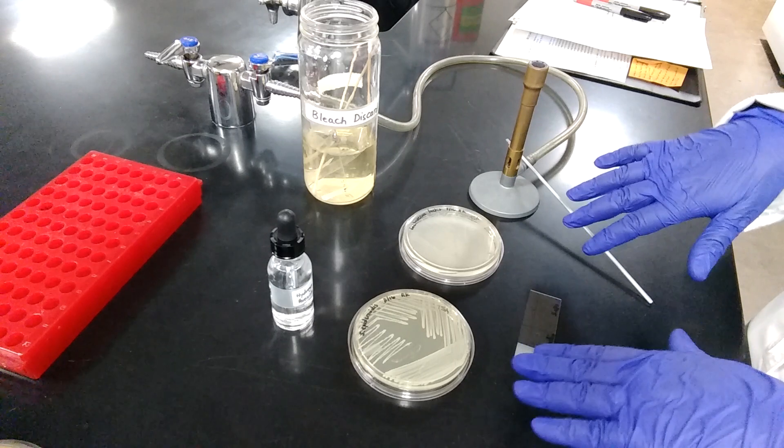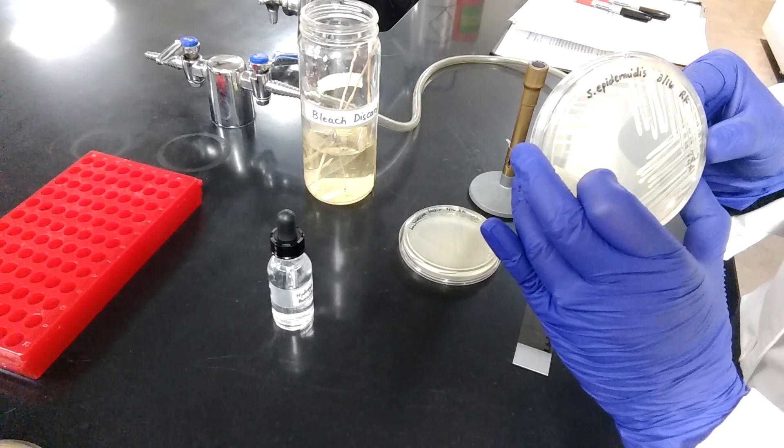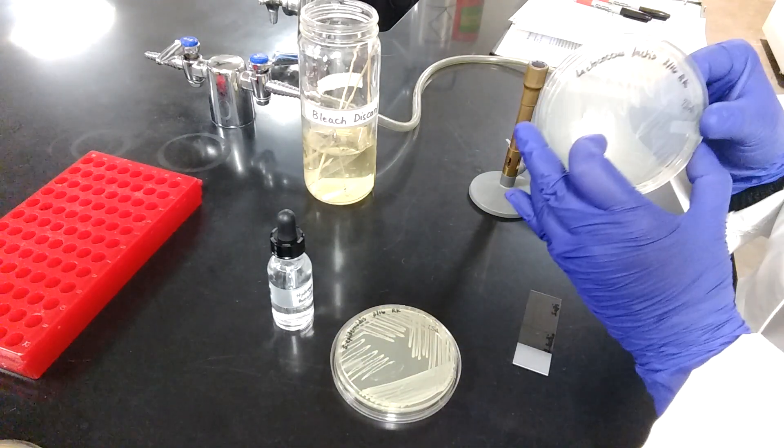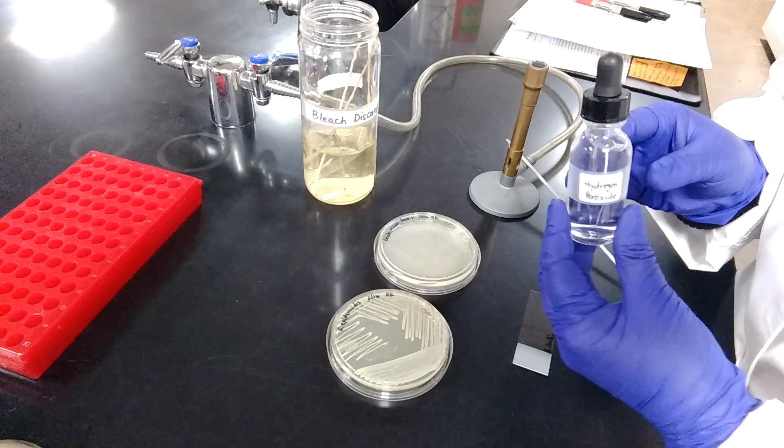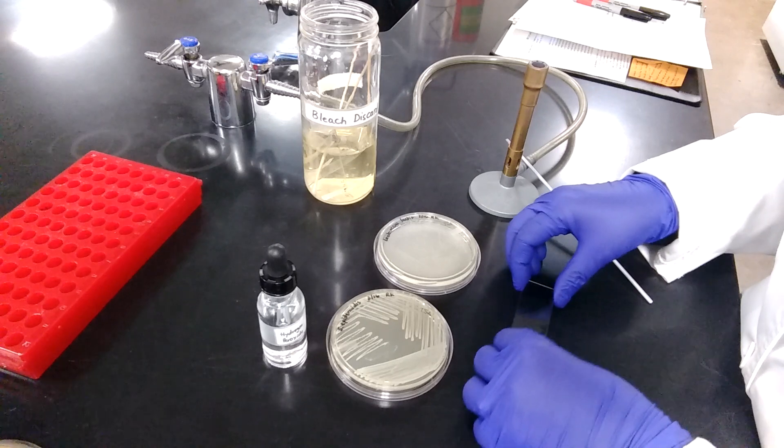For the experiment, we have two bacterial cultures that we will be testing: Staphylococcus epidermidis on TSA plate and Lactococcus lactis on TSA plate. We will use the reagent 3% hydrogen peroxide, and we'll use this clean glass slide to do the test on.